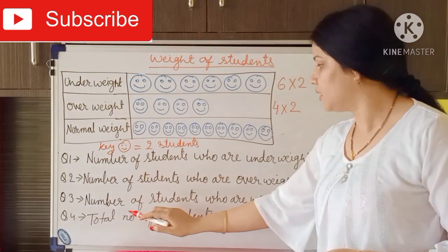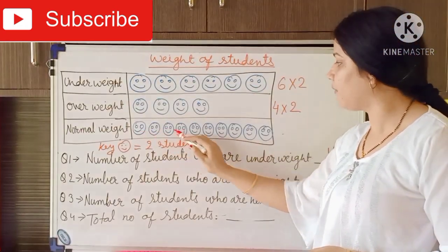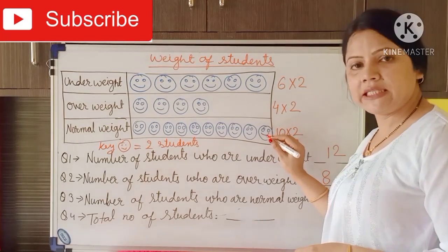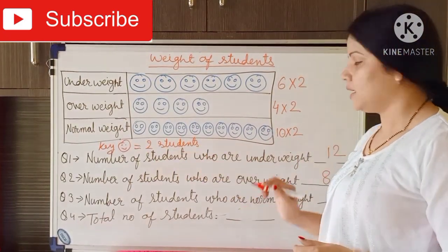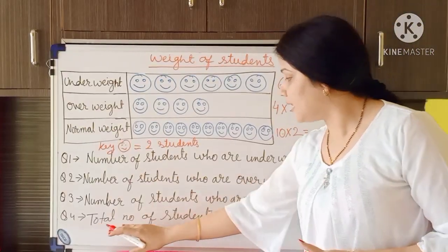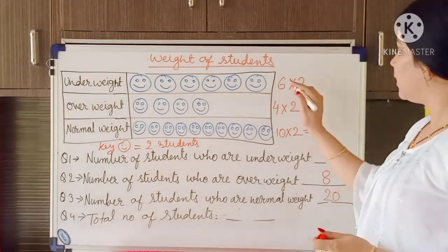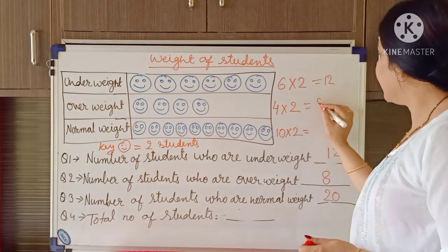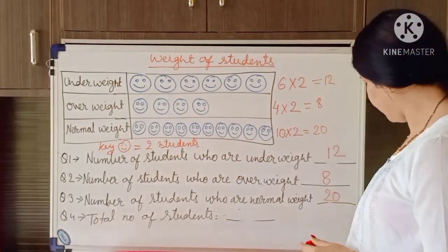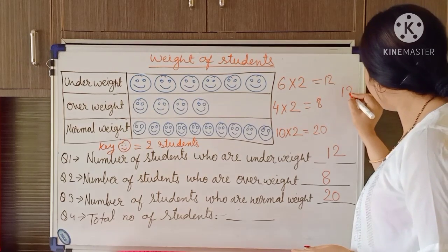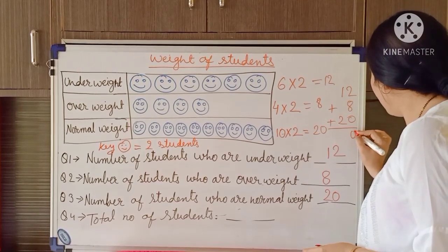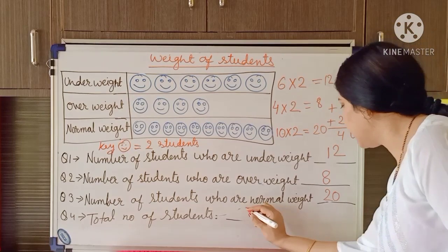For normal weight, there are 10 smileys, and each smiley is equal to 2 students, so 10 multiplied by 2 is equal to 20. At last, the total number of students: 12 plus 8 plus 20 is equal to 40. So here we can write the total number of students is 40. I think this is also clear — write this example in your maths notebook.